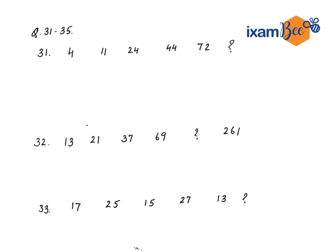Before solving these questions, I would like to tell you about one thumb rule regarding series questions. Whenever you see a series, either the numbers are increasing or decreasing. Or sometimes it will happen that the numbers will increase and then decrease. If the numbers are increasing, it is either addition or multiplication. And if they are decreasing, it is either division or subtraction.